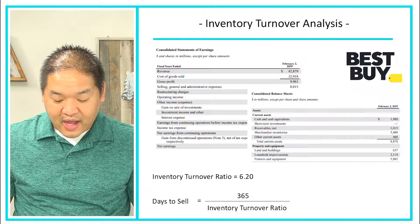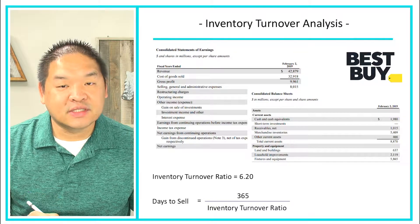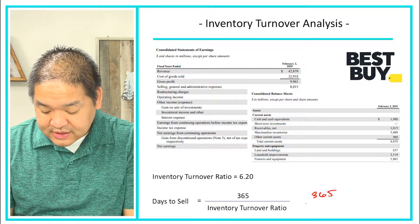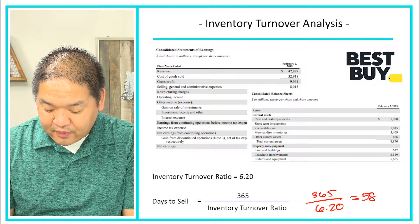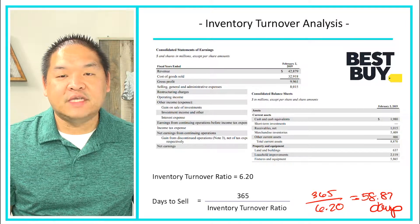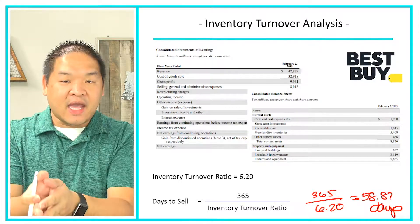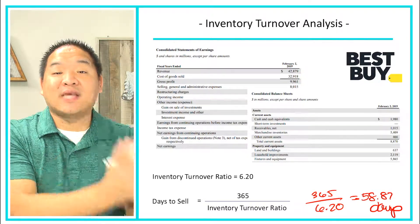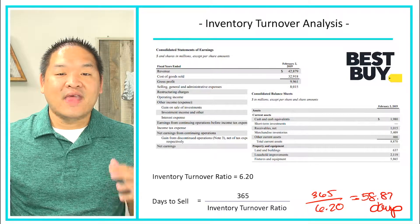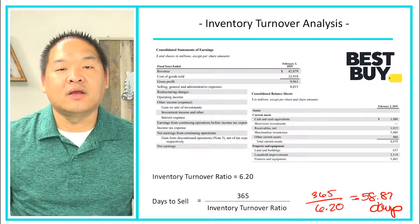Going back to Best Buy: our inventory turnover ratio is 6.20. Days to sell = 365 divided by 6.2, which gives us 58.87 days. So if I told my manager it's taking on average 58.87 days to turn over our inventory — meaning from the time we buy it to the time we sell it — my manager understands that number. They understand days; we're basically saying it takes two months to acquire and then sell our inventory.